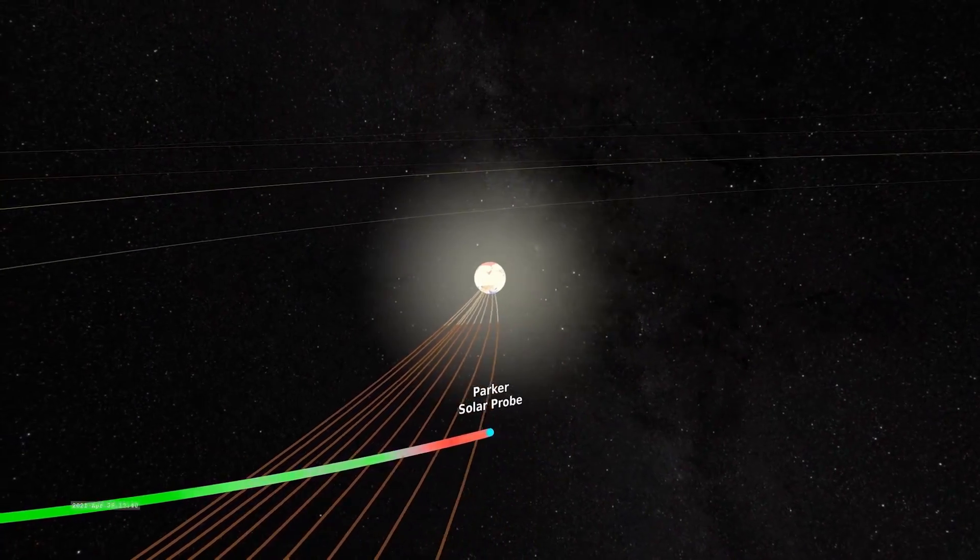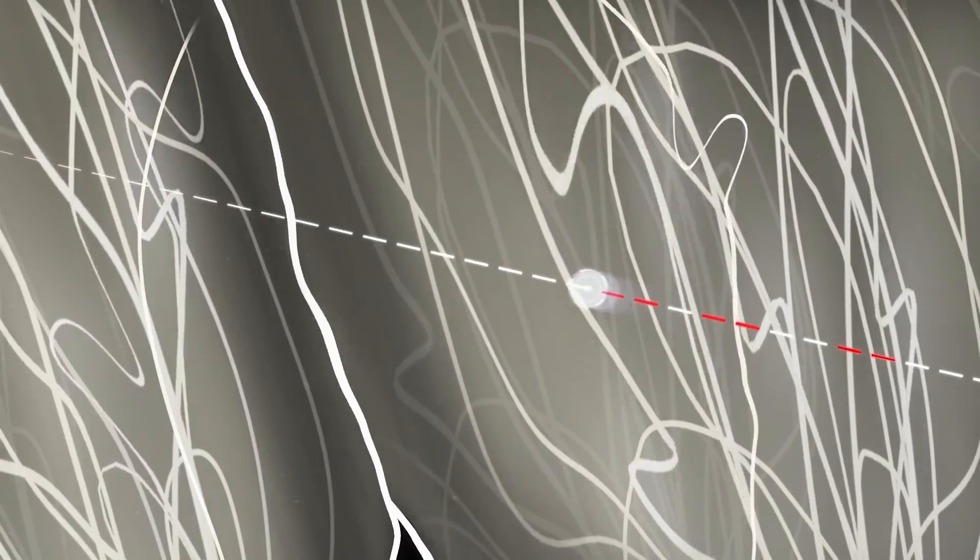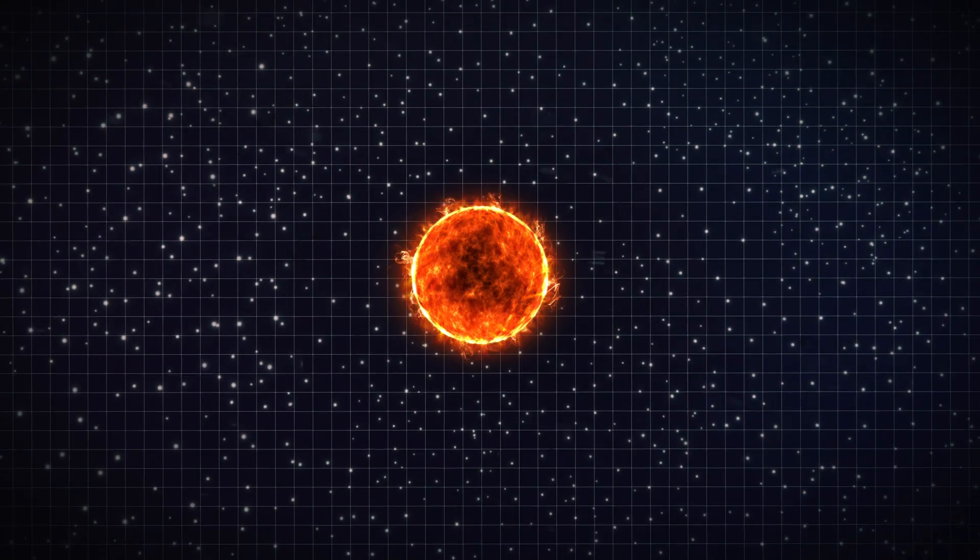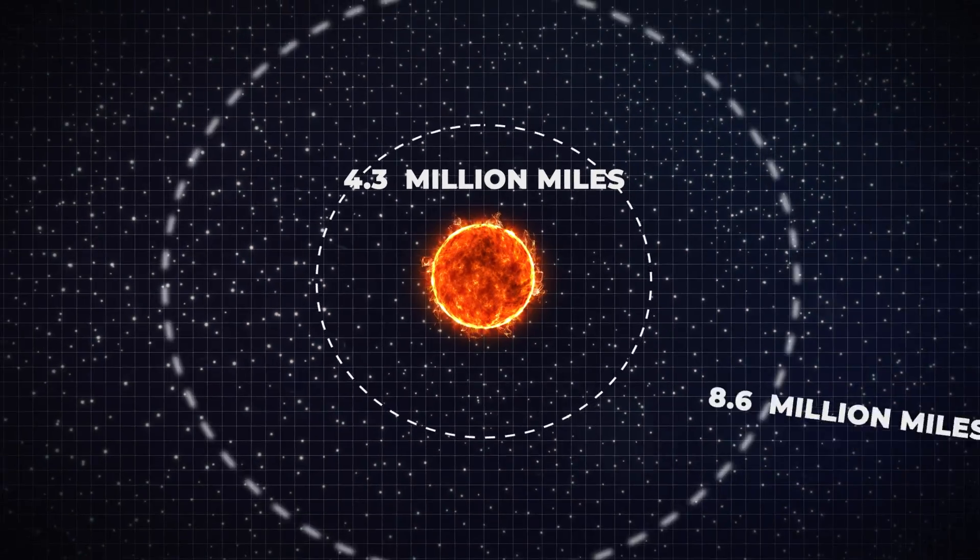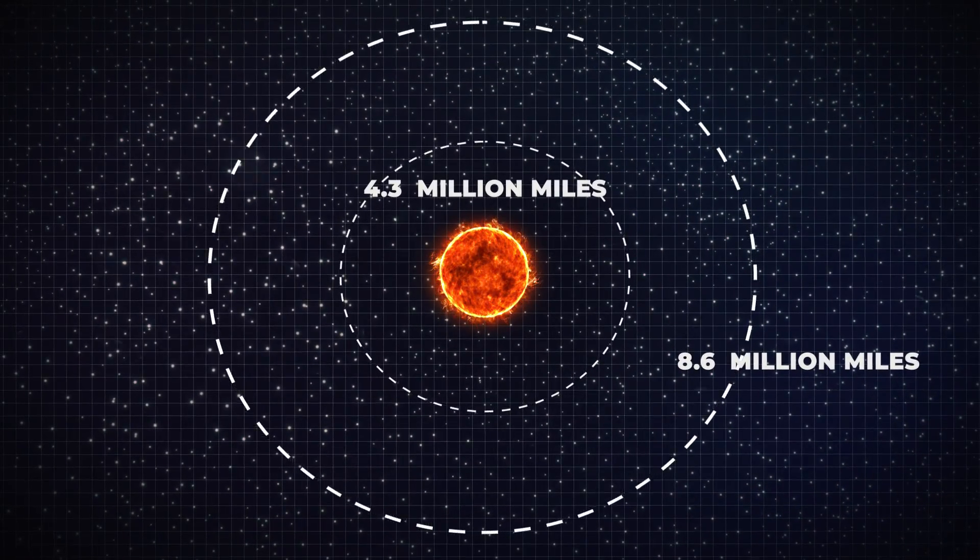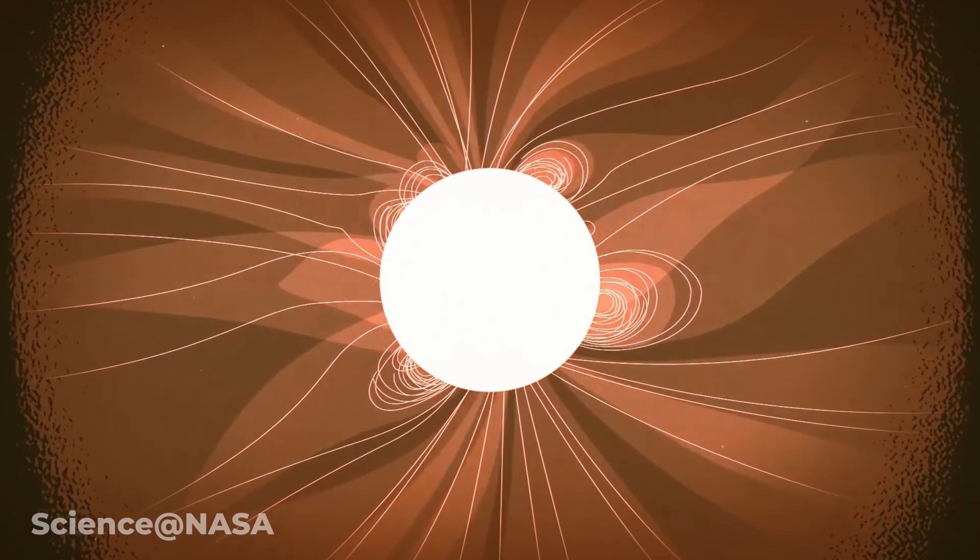Scientists have long known of this point of no return, but until now they could never figure out just how far away from the Sun it travels. Previously scientists have thought that the critical surface was somewhere between 4.3 to 8.6 million miles from the surface of the Sun, or about 10 to 20 times the radius.